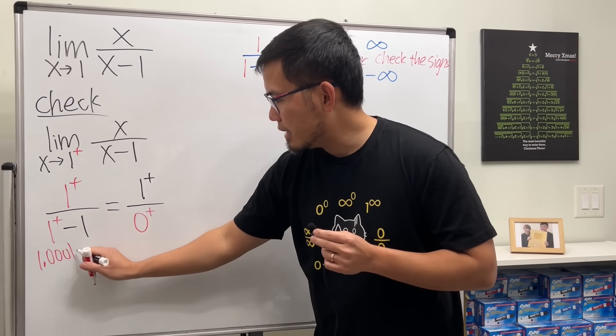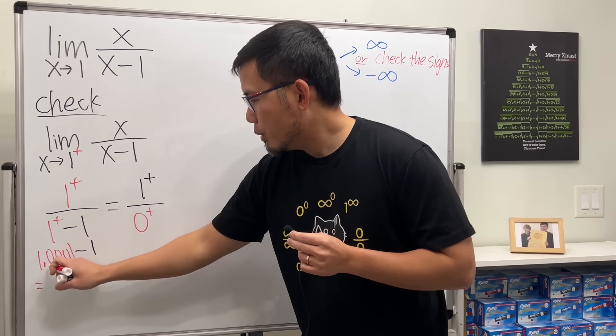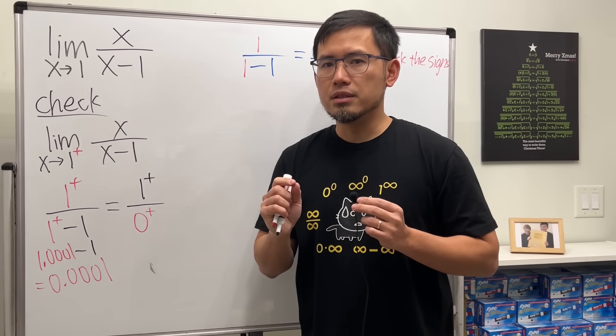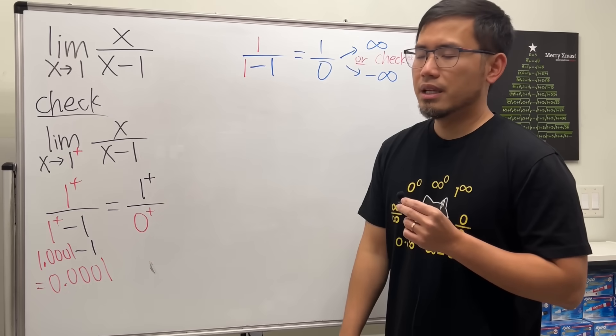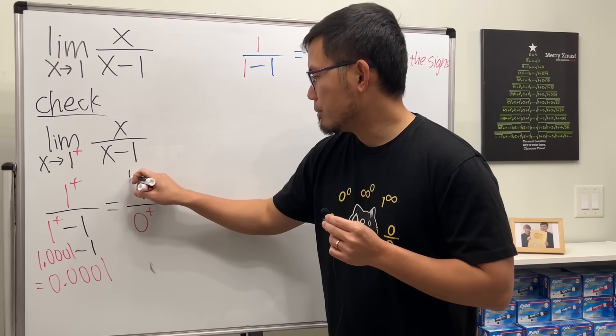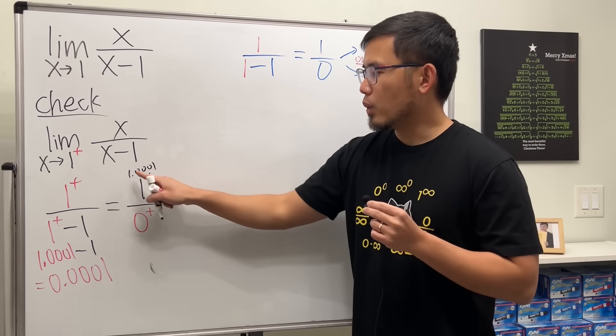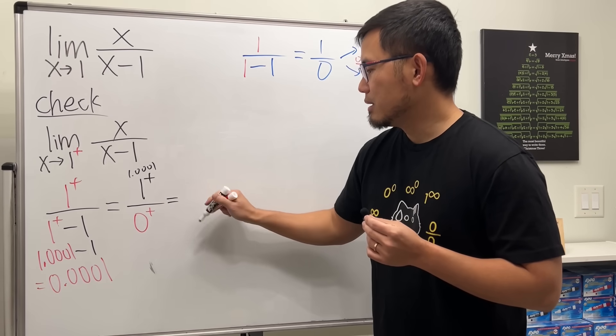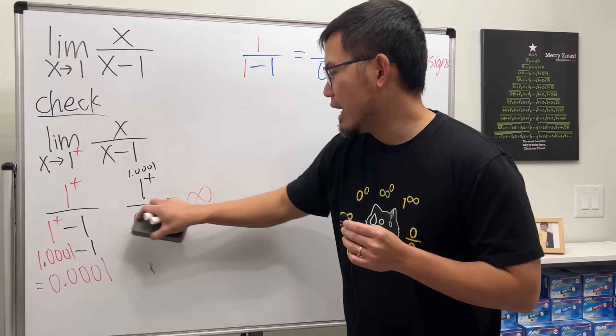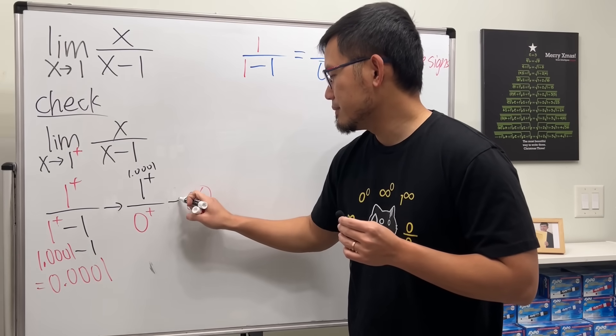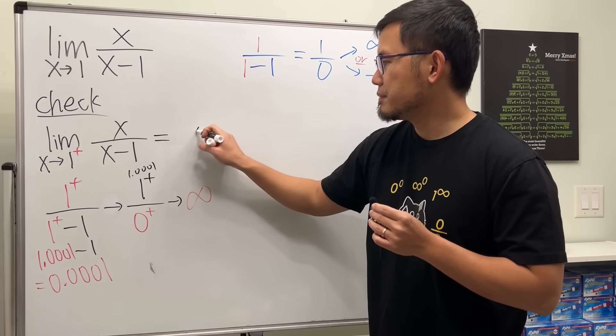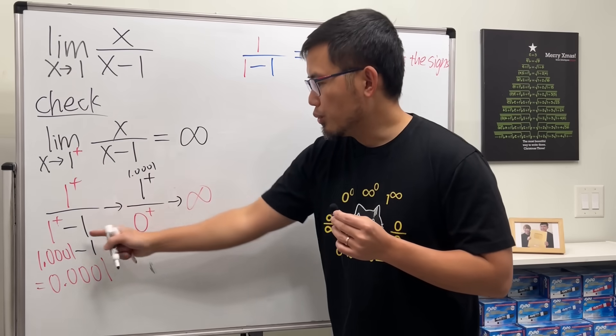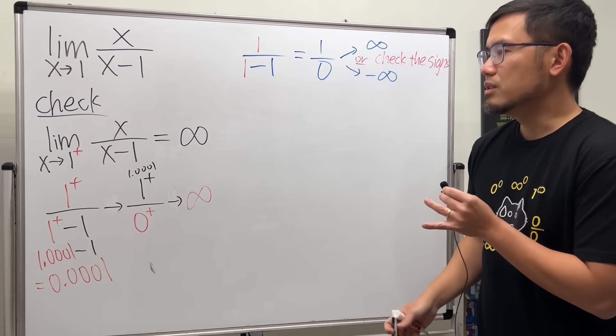So if you take a look right here and then minus 1, you see on the bottom, 1.0001 minus 1, we just get 0.0001. It's a number a little bit bigger than 0. So don't just write down 0. Write down 0 plus. And the top right here is 1 plus, which is like 1.0001. And now you have a number 1 on the top divided by a very small number. This right here will give us positive infinity. And in fact, I should be using arrows because I'm technically doing limits. So this limit is equal to infinity. When you do this, you should draw arrows as a way to show that you are taking a limit.